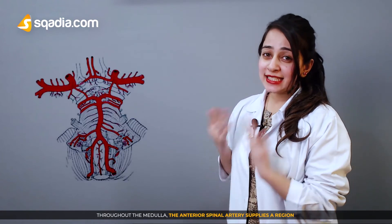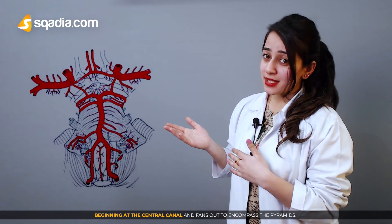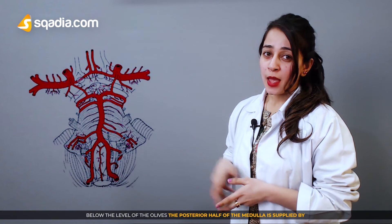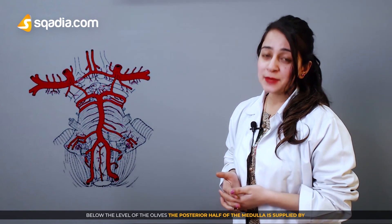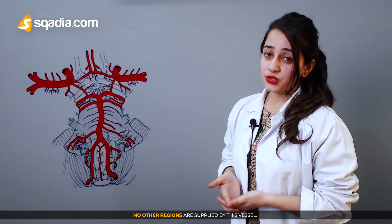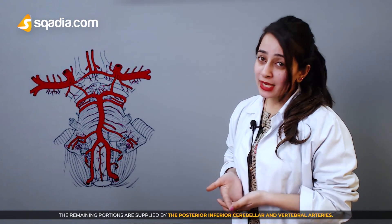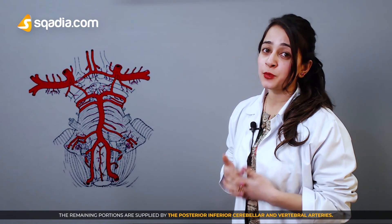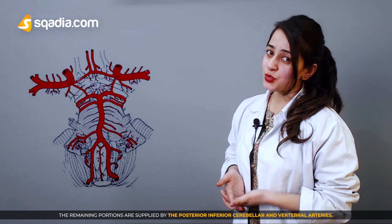Throughout the medulla, the anterior spinal artery supplies a region beginning at the central canal and fans out to encompass the pyramids. Below the level of the olives, the posterior half of the medulla is supplied by the posterior spinal arteries. The remaining portions are supplied by the posterior inferior cerebellar and the vertebral arteries.